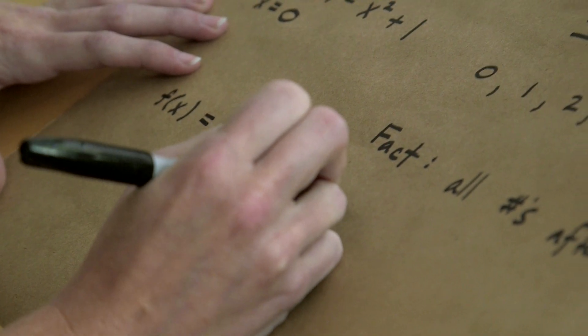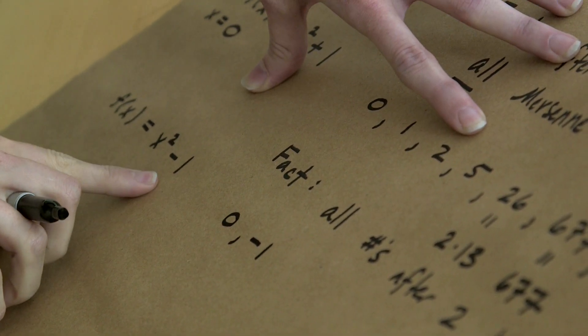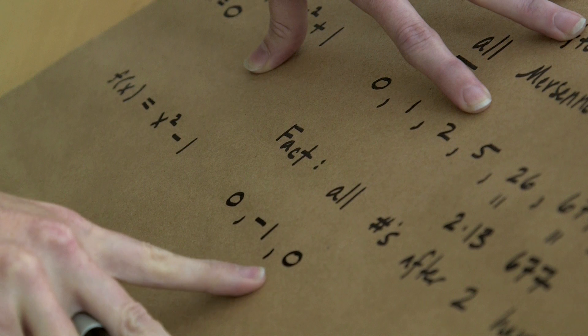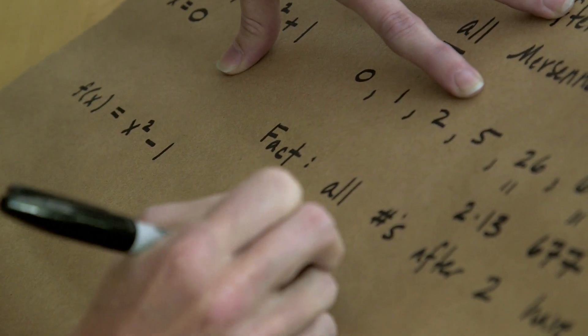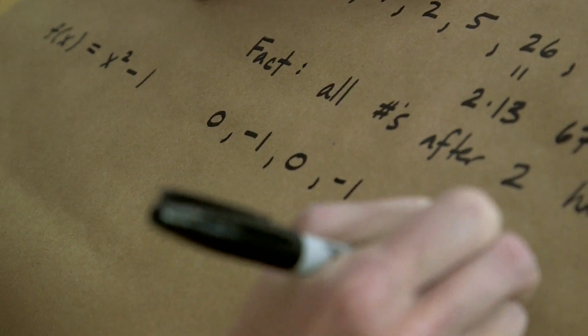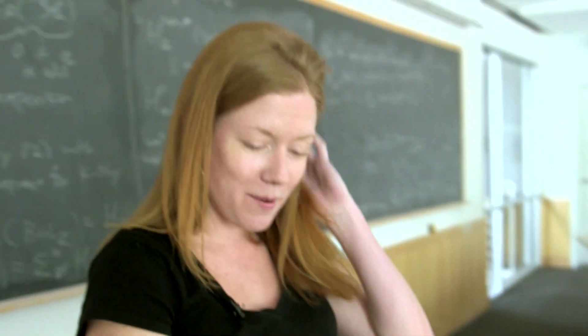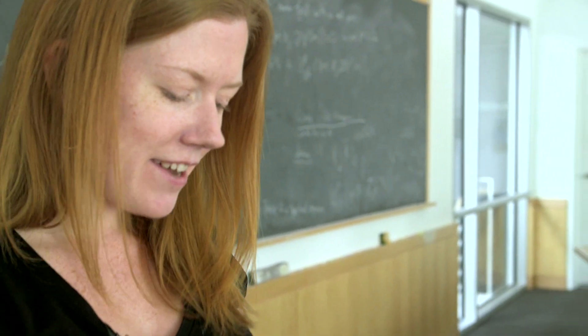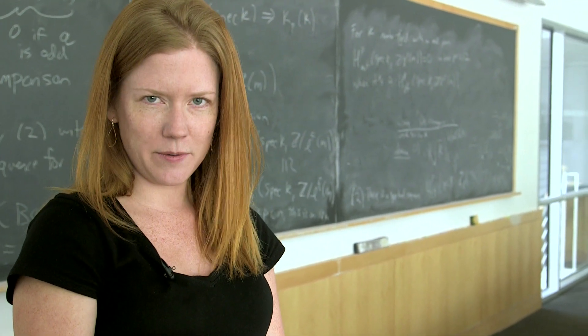So again, we start with 0. 0 maps to negative 1. Negative 1 maps to 1 squared minus 1, which is 0. But we already know where 0 maps. 0 maps to negative 1. And so this sequence we get is completely not interesting. I think that's cool. How can you say that's not interesting? Well, it's definitely not going to have this property that we have new prime divisors, at least. So this is bad news, right? As far as this question is concerned, this is a weird sequence.